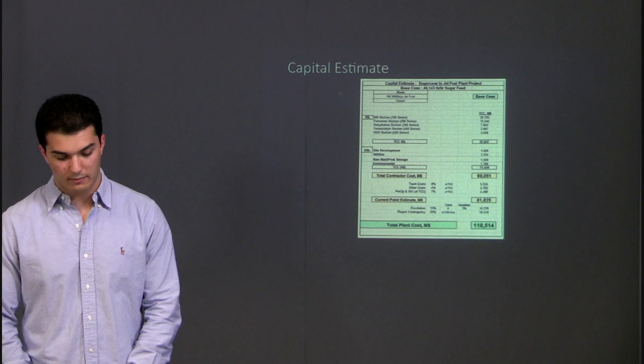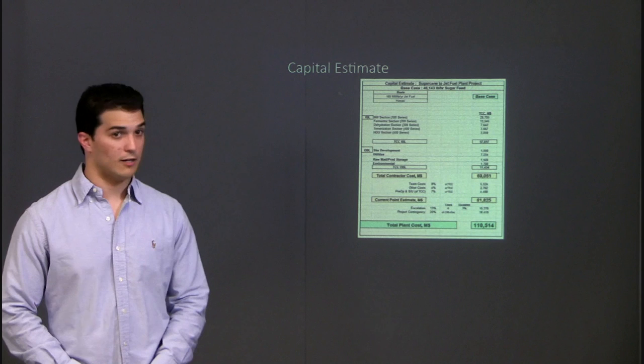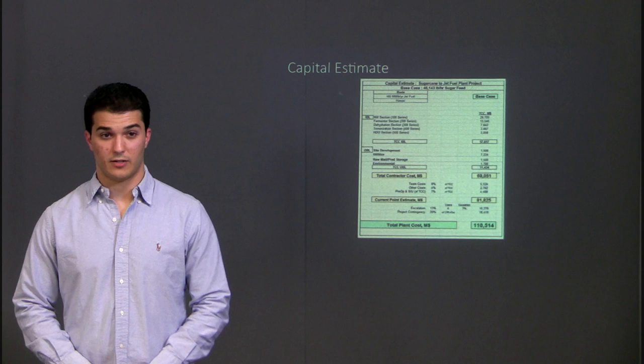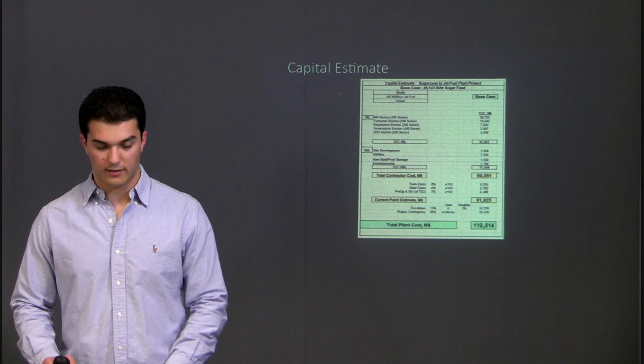A majority of the IBL equipment was sized and costed via Aspen Icarus Economic Analyzer, while the remainder of the items, including the outside battery limit equipment, the mill, and all the reactors, were estimated via direct vendor quotes. Additionally, an escalation of 3% per year and a plant contingency of 20% was also built in to the total plant cost of $110 million, seen below.